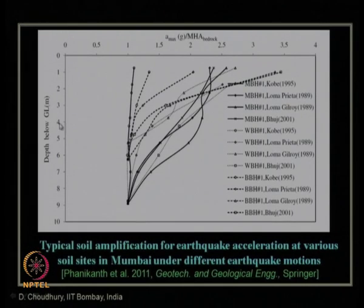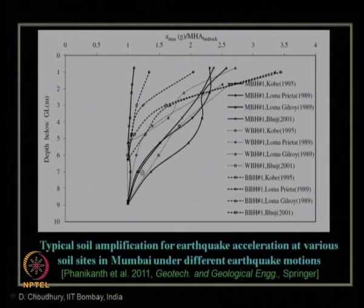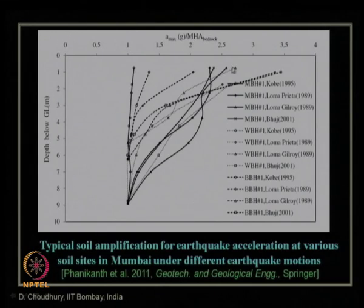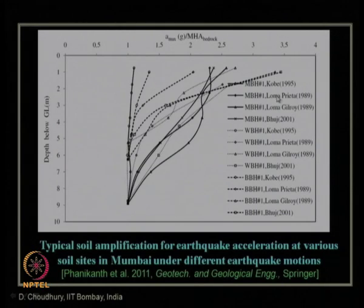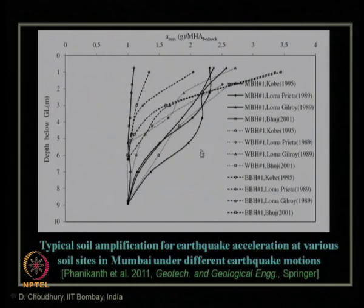We also examined how much amplification of the bedrock motion occurs as it passes through various soil layers. At different soil layers, one can compute the A_max/A_h ratio at bedrock level. The results show soil amplification at the ground level ranges between about 1.2 to 3.5, depending on the input motion and the specific borehole analyzed.